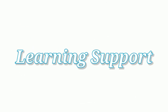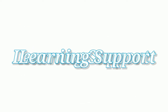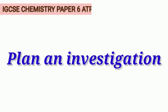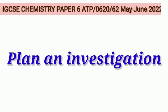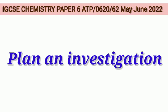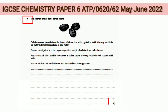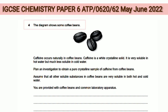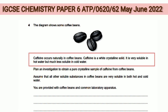Hello friends, in this video we are doing the plan and investigation part of chemistry paper 6, alternative to practicals 0620. It is May/June 2022, question 4 of the paper, which carries six marks, so we should write at least six points. Let us go through the question — the diagram shows some coffee beans; caffeine occurs naturally in coffee beans.